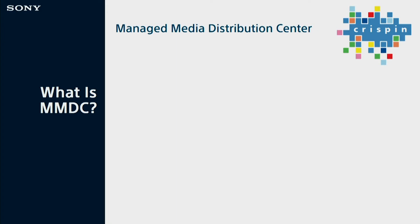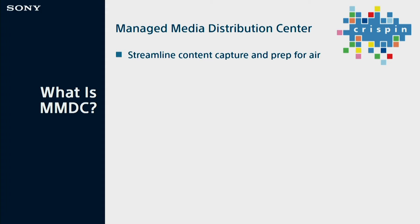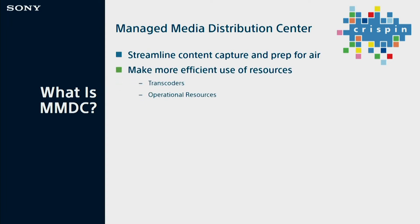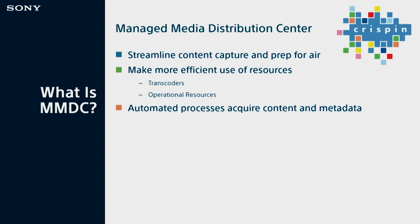We call this solution the Managed Media Distribution Center, or MMDC for short. The idea behind it is we're going to help you streamline your content capture and your prep for air. We're going to make more efficient use of your resources — your transcoders. You have multiple transcoders across your station group; we could transcode in one location and share it across the country to other station groups. Basically, we're automating those processes to acquire that content and the associated metadata with it.